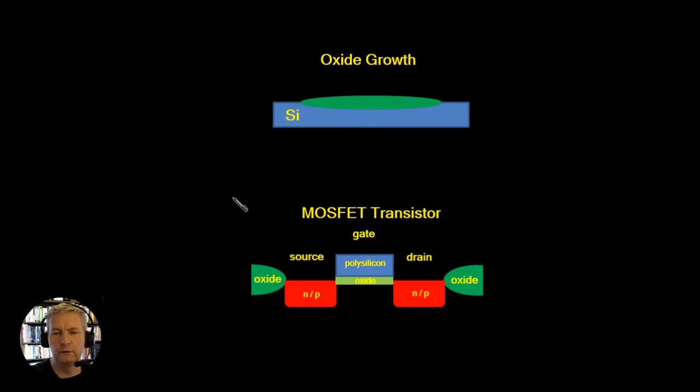So what we can do is we can now using these three broad categories we can produce our MOSFET transistor and here's an idealized drawing of the MOSFET transistor. We have our green oxide layers here and also here below the gate.